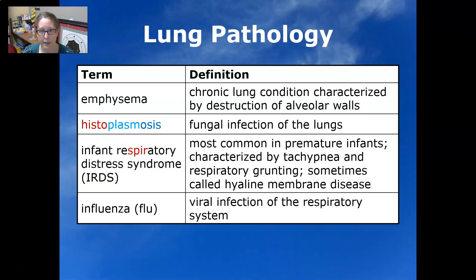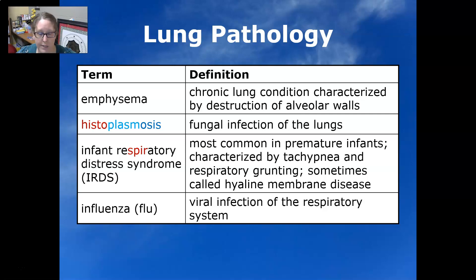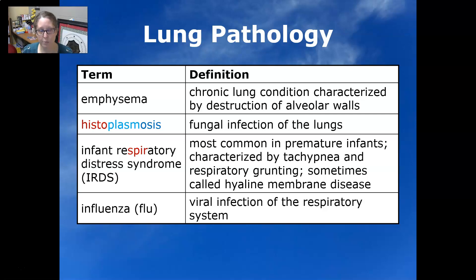Emphysema is a COPD — a chronic lung condition characterized by the destruction of the alveolar walls. The alveoli, which normally have a nice bubble-like shape, become more dilated and lose their roundness and surface area. Histoplasmosis is a fungal infection of the lungs. Infant respiratory distress syndrome (IRDS) is most common in premature infants and is characterized by tachypnea and respiratory grunting, sometimes called hyaline membrane disease. Influenza, also known as the flu, is a viral infection of the respiratory system.